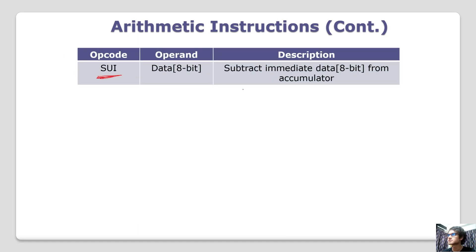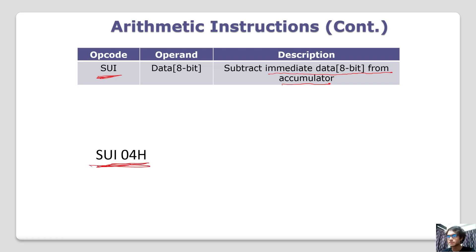SUI is Subtract Immediate. Immediate data, 8-bit data, subtracted. This is ADR. SUI — this is the immediate data. This is the accumulator. So, accumulator is 18.